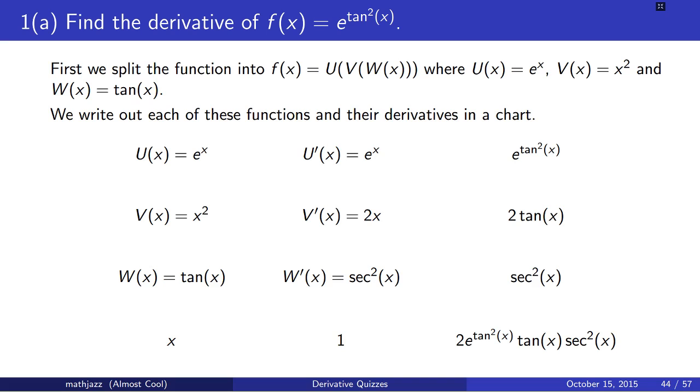And the product of these three functions, that is 2e to the tangent squared x times tangent times secant squared x, is the derivative of f. So, this table method is a nice way of just organizing where everything goes in the chain rule.